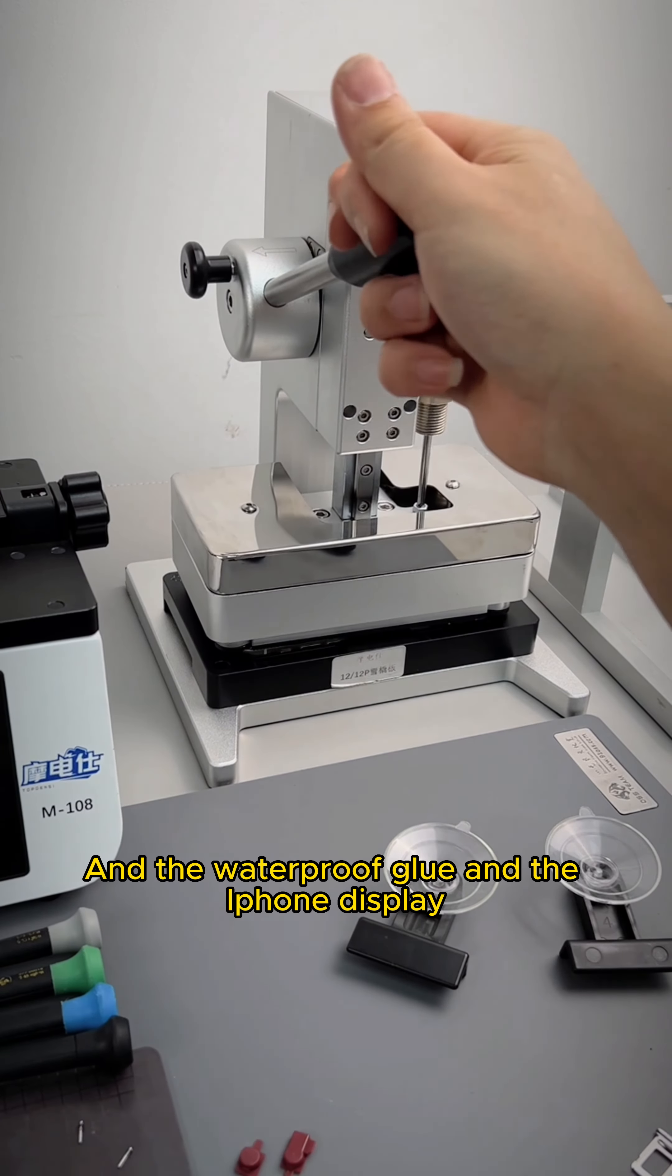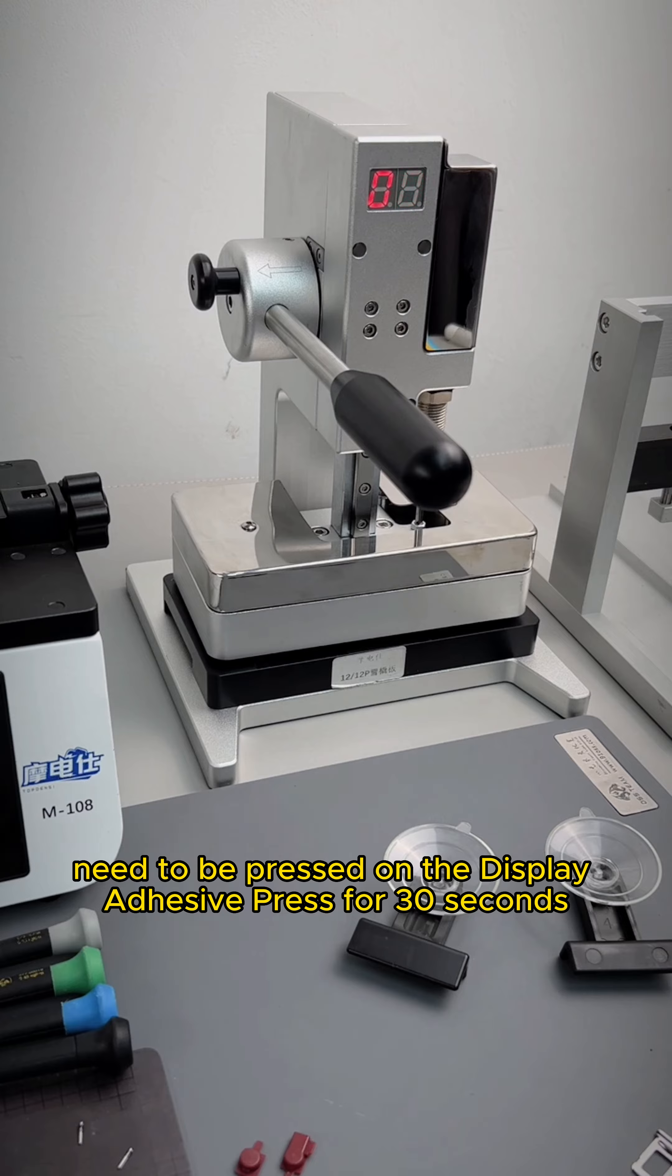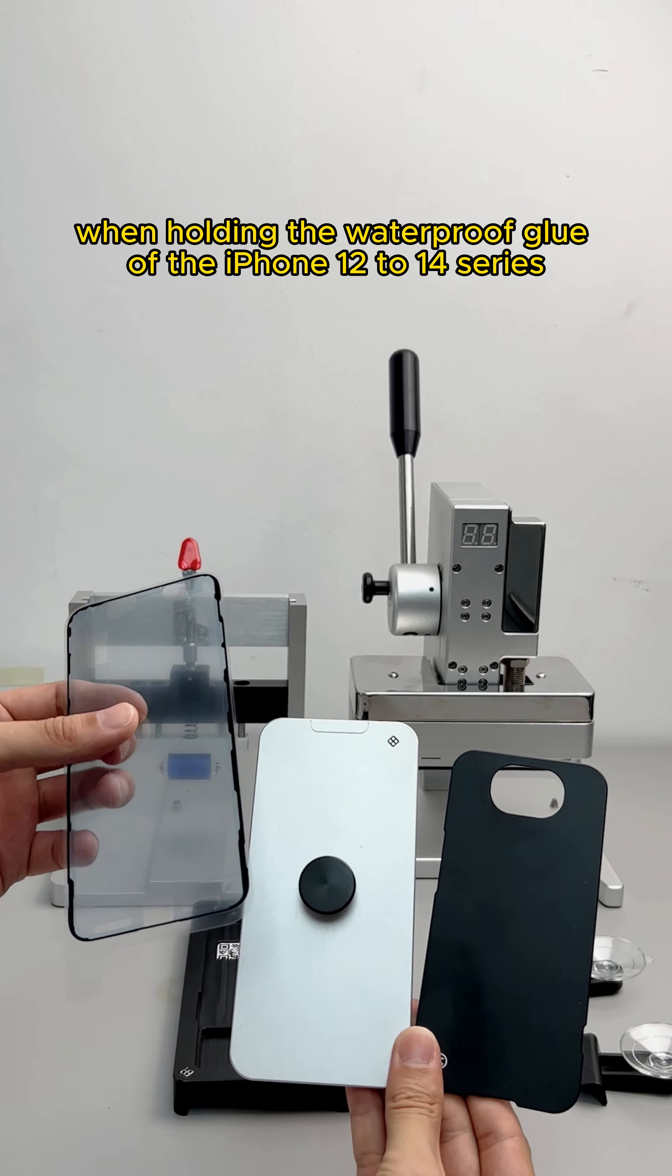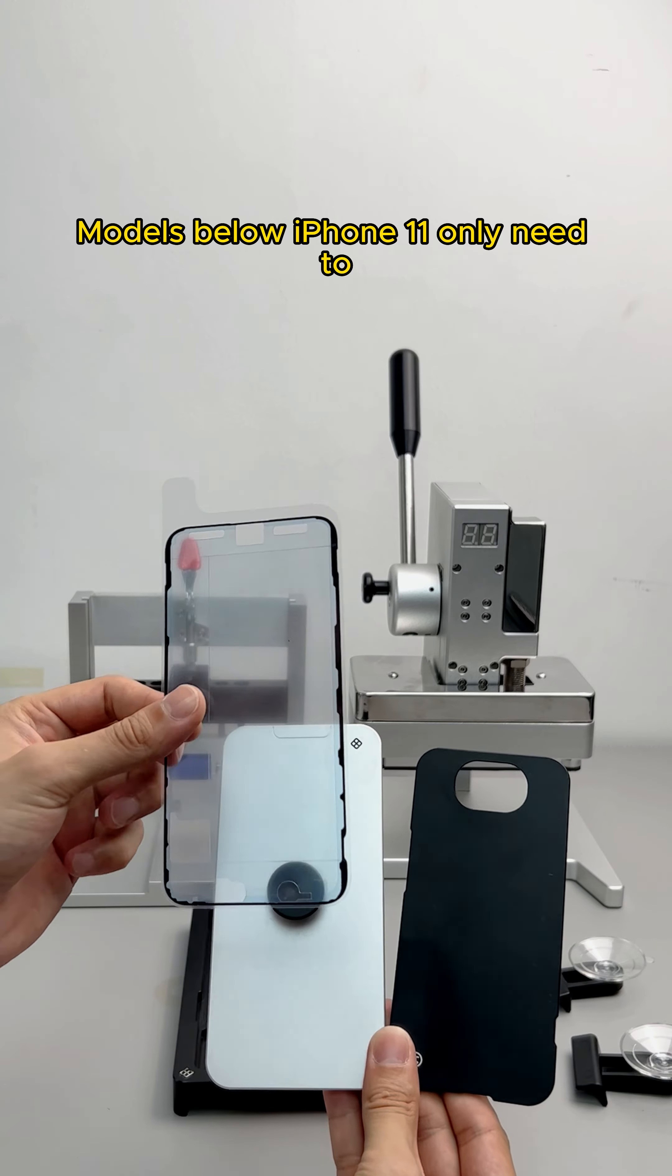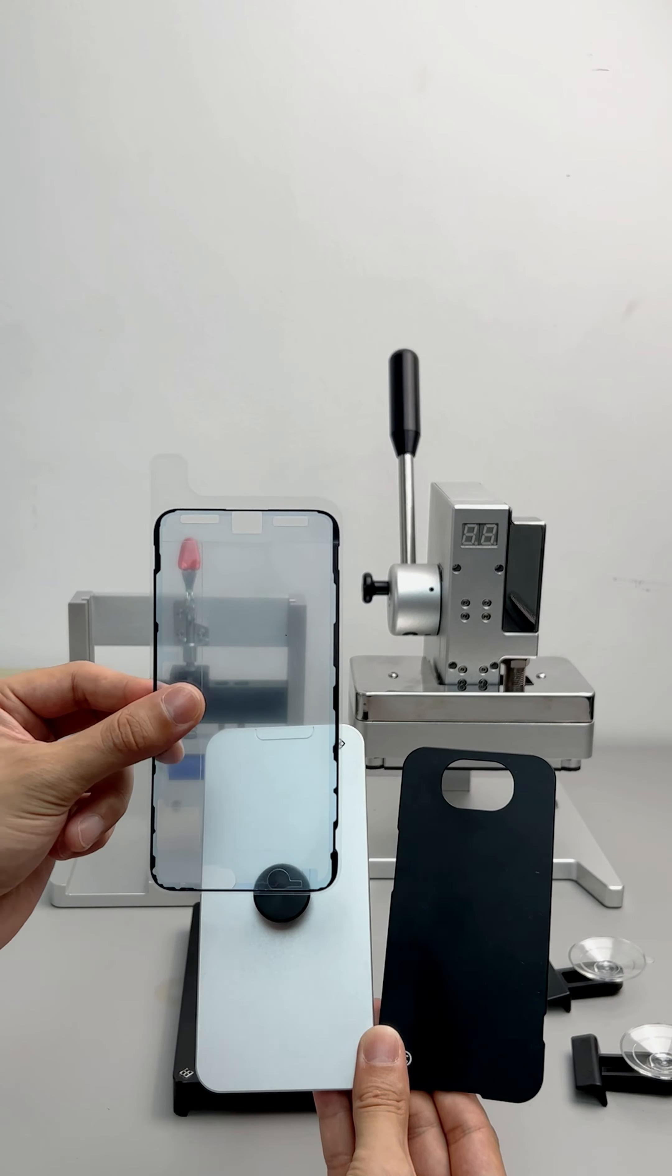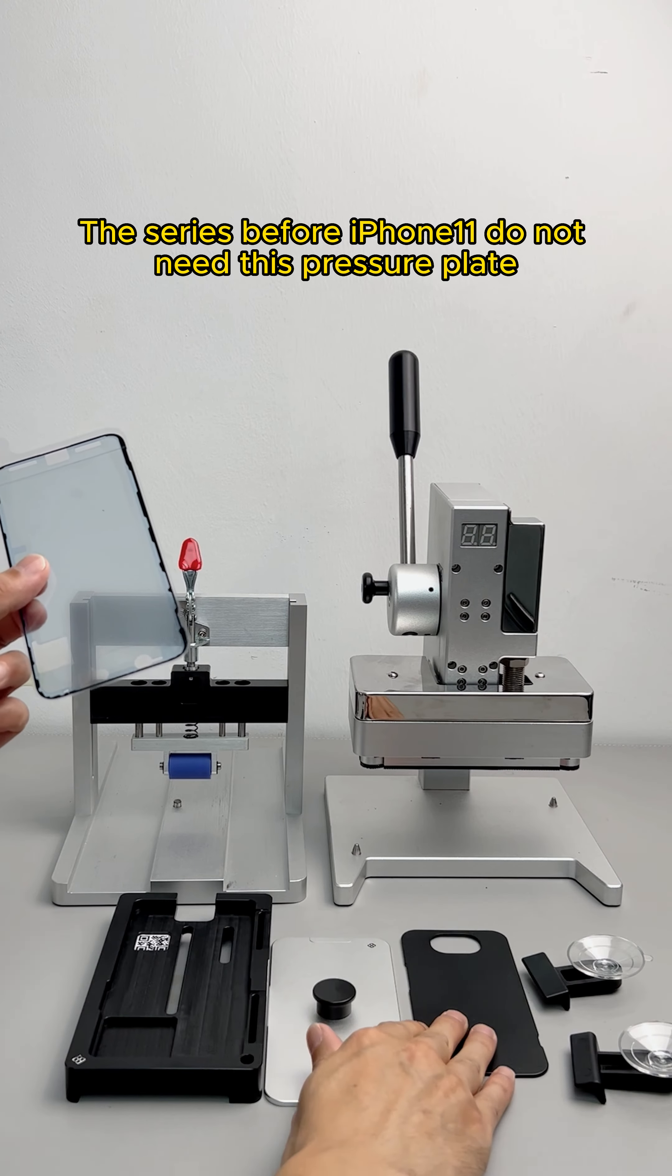The waterproof glue and the iPhone display need to be pressed on the display adhesive press for 30 seconds. This pressure plate is used when applying waterproof glue for iPhone 12 to 14 series. Models below iPhone 11 only need to be waterproofed and pressed with a plastic stick and do not need this pressure plate.